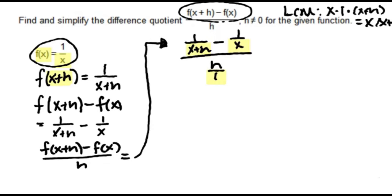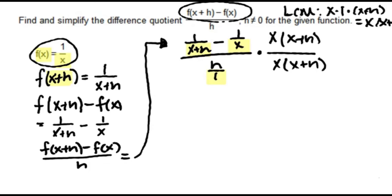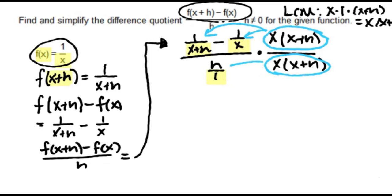Once we find that least common multiple, we're going to multiply it by the numerator and denominator of our big fraction — multiplying by x times x plus h on both top and bottom. We're allowed to do that because we're multiplying by a form of 1, and 1 times anything stays the same. We then apply the distributive property to the numerator, and in the denominator we just multiply it times h.